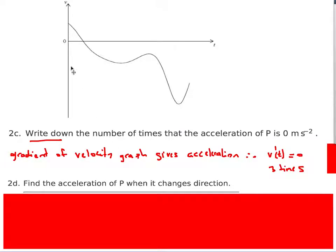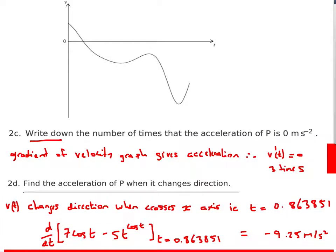Find the acceleration when p changes direction. The particle changes direction when the velocity graph crosses the x-axis, going from positive to negative velocity. Finding where it crosses gives t = 0.863851. We can then differentiate on the calculator: input the velocity function and find the gradient at that t value. The answer is minus 9.25 metres per second squared. Students don't always know which buttons to press for this, so make sure you practise it.